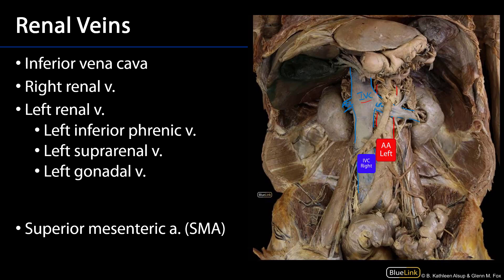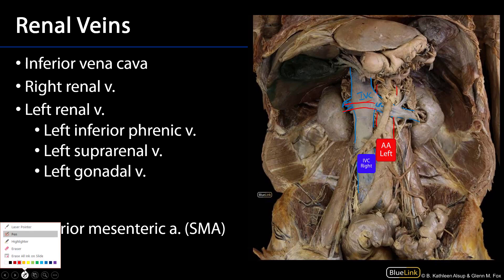These are lying just anterior to the bodies of the vertebrae. We can therefore see that the left renal vein is much longer. We can also deduce that the right renal artery is going to be much longer — it travels posterior to the inferior vena cava on its way over. So there is an asymmetry of length between the two sides.